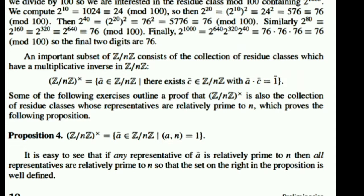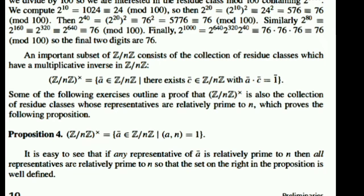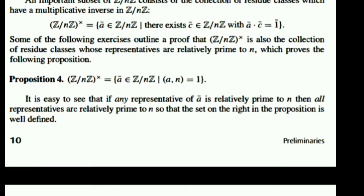Firstly, look that 2 to the power 10 is 1024, which is congruent to 24 mod 100. Now we will square both sides, so the right hand side will be 24 squared, that is 576, which is 76 mod 100. Again we square, then the left hand side will be 2 to the power 40, and the right hand side will be 76 squared, that is 5776, which is again 76 mod 100. We continue the process until we get the desired result: 2 to the power 1000 is congruent to 76 mod 100. Therefore the final two digits will be 76.